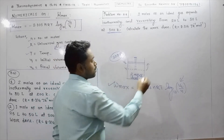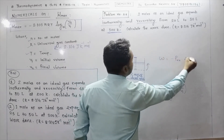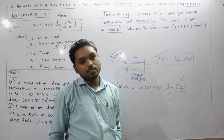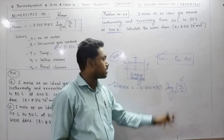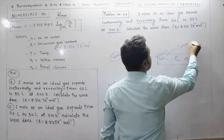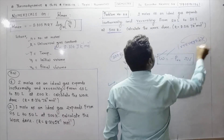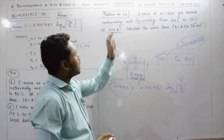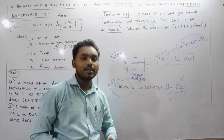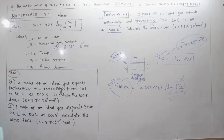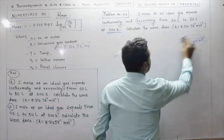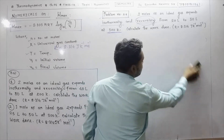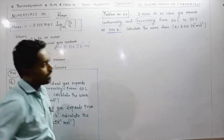There is another formula: W is equal to minus P_external into delta V. However, that formula applies to an irreversible process, not a reversible one. The formula Wmax equals minus 2.303 nRT log of V2 upon V1 to the base 10 is specifically for the reversible process.